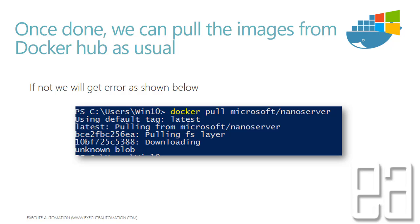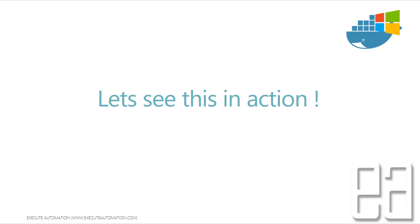Once done, we can pull images from Docker Hub as usual. But if you don't switch to Windows containers, you'll see an error message. If you do 'docker pull microsoft/nanoserver', you'll get a message saying 'pulling FS layer' and then 'unknown blob', because this binary large object is not supported by the Linux kernel, which is the default kernel for Docker. You need to switch before this will work.